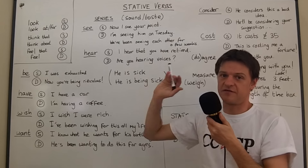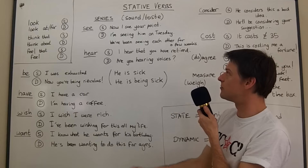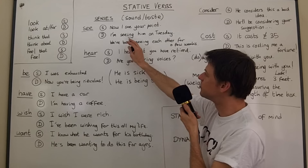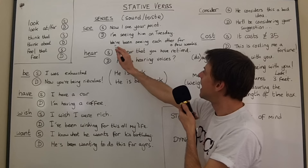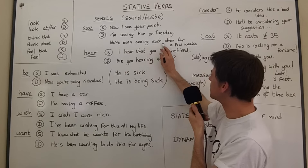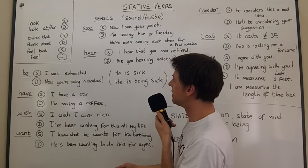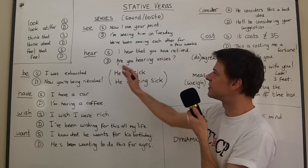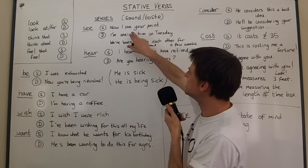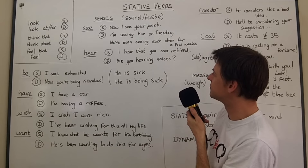We can certainly use 'see' in continuous forms for future plans or arrangements — 'I'm seeing him on Tuesday.' We can also use it for romantic meetings: 'we've been seeing each other for a few weeks' sounds pretty clear that you've been going out together. So 'see' is used dynamically in that way, and the meaning of the verb actually changes.